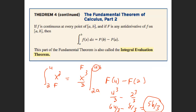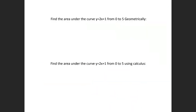Now I want to do a problem where we can figure it out by hand. I want you to find the area underneath the curve y = 2x + 1 from 0 to 5. So how would that be written as an integral? It would be written as the integral from 0 to 5 of 2x + 1. We know that the integral of this is just the area underneath the curve.